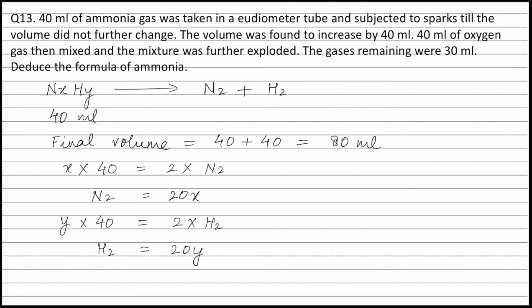Since the final volume is 80 ml, the final number of moles is 80. Therefore we can write: moles of nitrogen plus moles of hydrogen equals 80, or 20X plus 20Y equals 80. Therefore X plus Y equals 4.